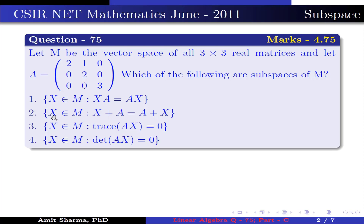Option 2: x belongs to M such that x + A = A + x. Option 3: x belongs to M such that trace of Ax equals 0. Option 4: x belongs to M such that determinant of Ax equals 0.